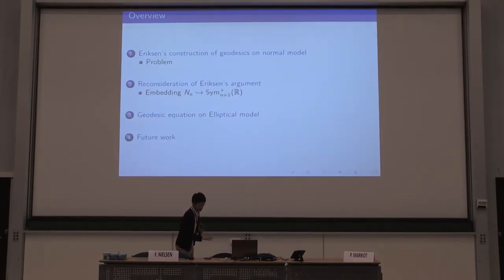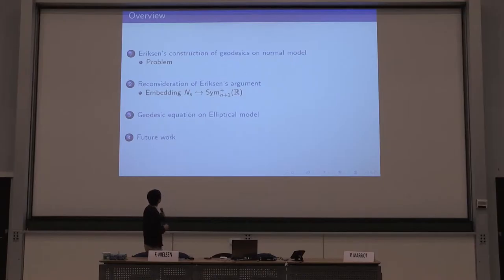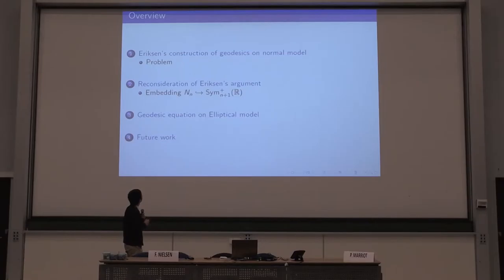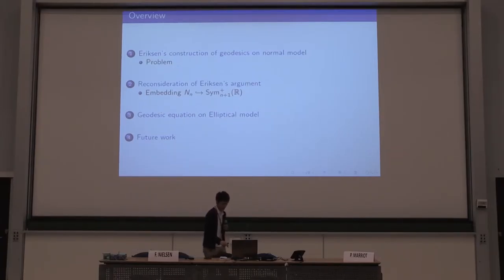This is an overview of my talk. First, I'll show you the previous result for constructing the explicit geodesics on the normal model, and I'll raise a problem regarding this result. From this point of view, we will reconsider this result and consider the extension of this result to the elliptical models.